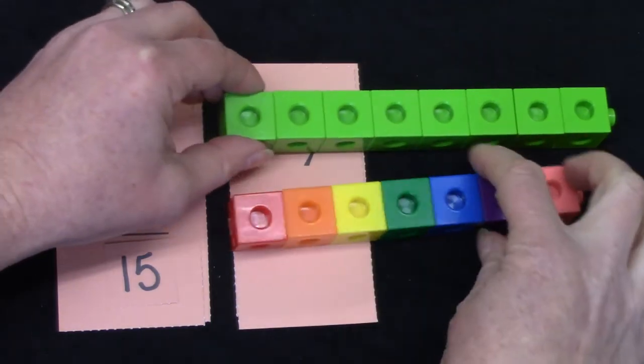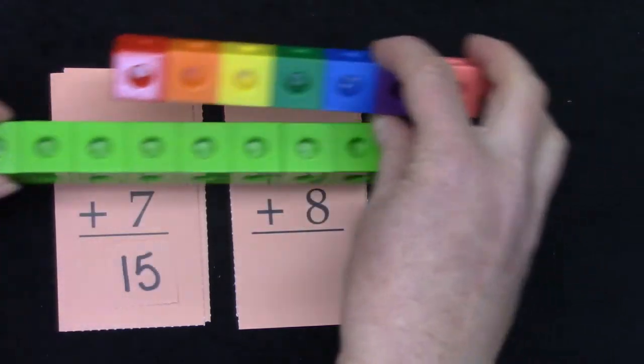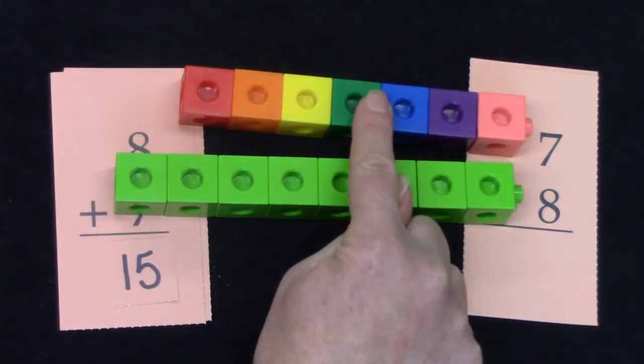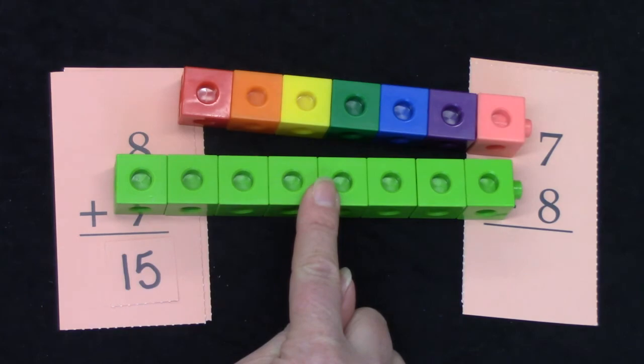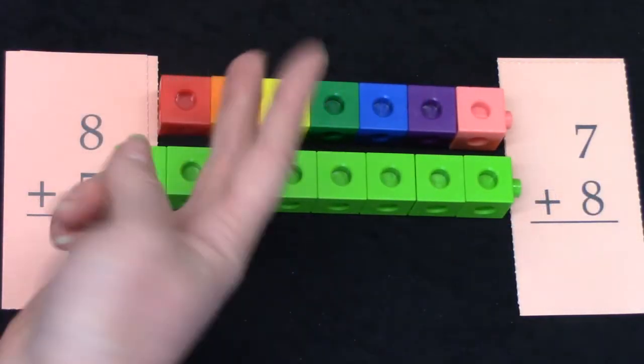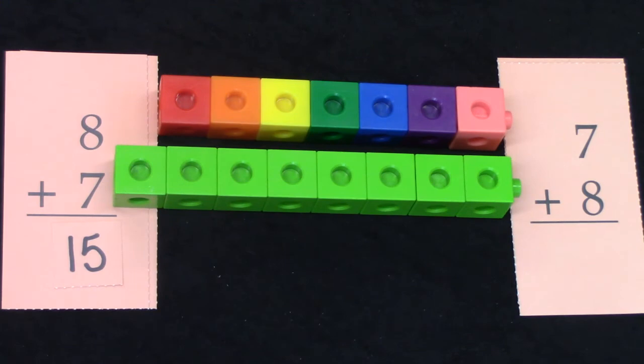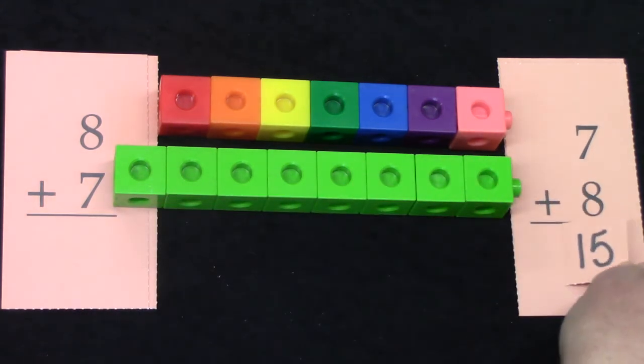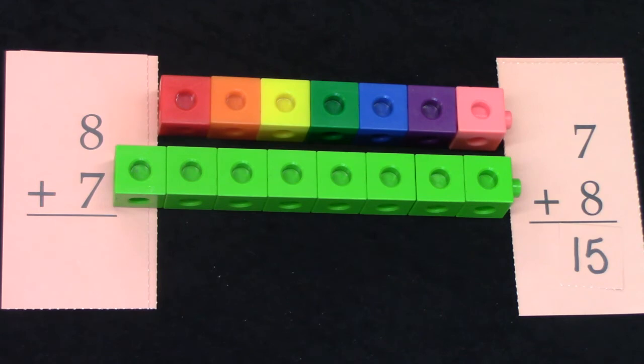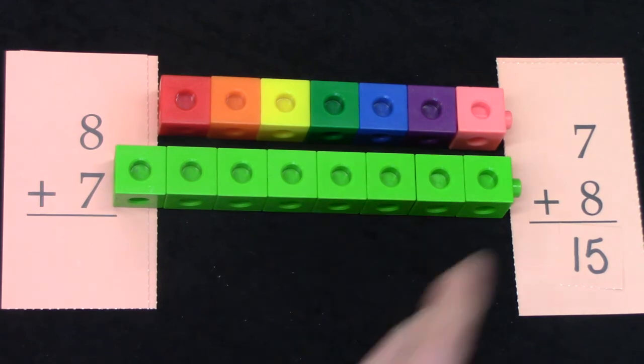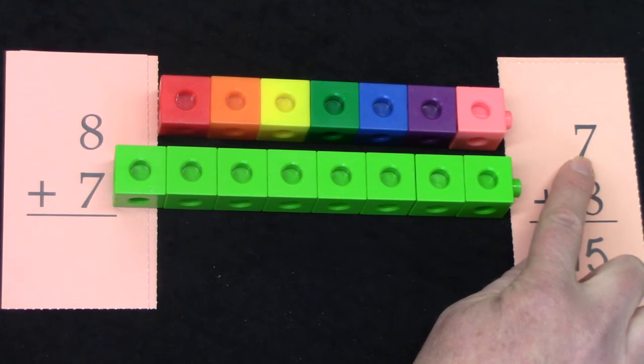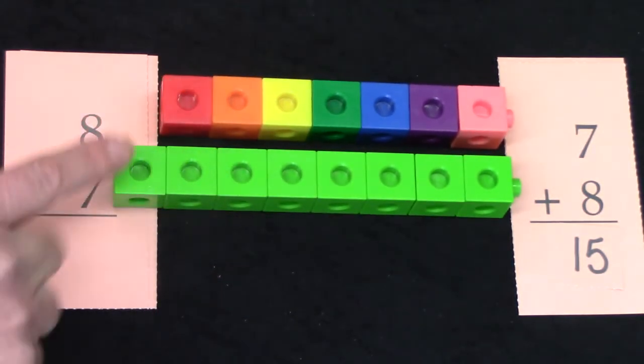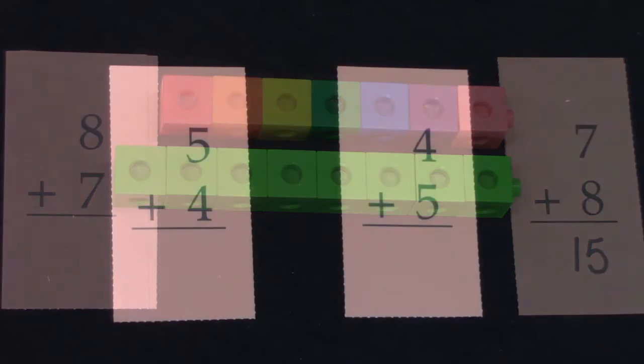Well what if we switcheroo and instead of having 8 plus 7 we have 7 plus 8? Is that going to have the same answer? All that I did was switch our numbers. I didn't take any away and I didn't add any. So just like 8 plus 7 was 15, 7 plus 8 is going to be 15. These are switcheroo facts because 7 plus 7 is 14 plus one more is 15. 2, 4, 6, 8, 10, 12, 14 and one more. 15, 15 in both.